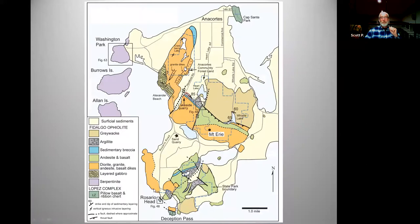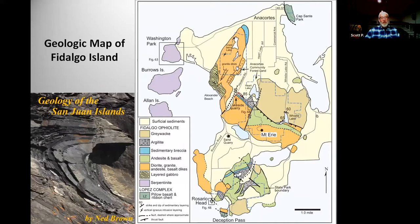I want to give a plug to this book by Ned Brown. He was kind of my mentor as an undergraduate at Western Washington University. If you're interested in the geology of the San Juan Islands, this is the go-to resource — very accessible for non-geologists, very good explanations, very good graphics. It's not on Amazon but you can get it at Village Books in Fairhaven online, or visit the place next time you're up there.